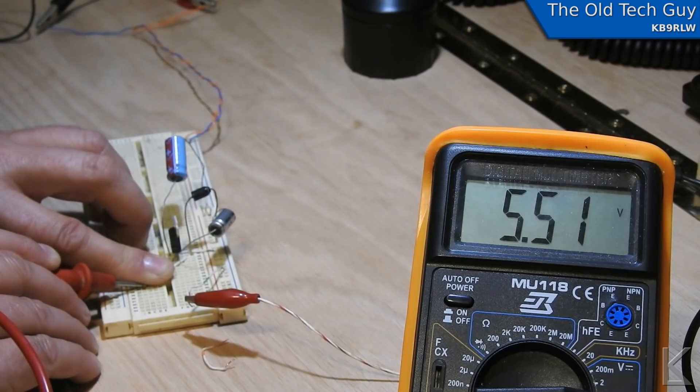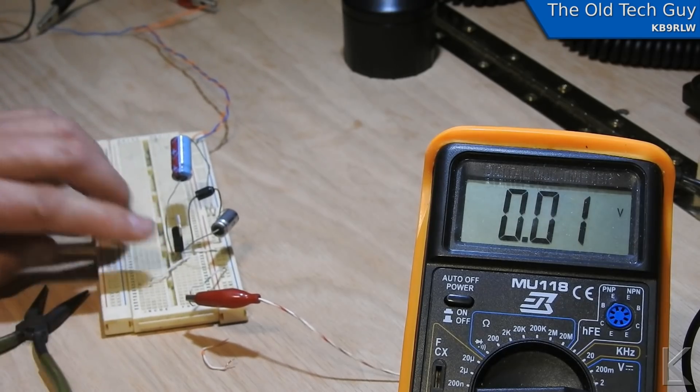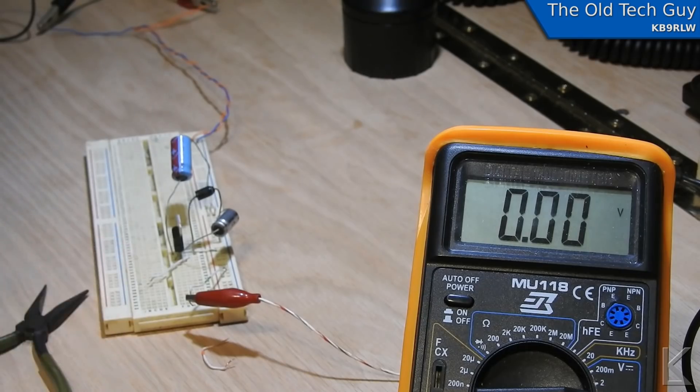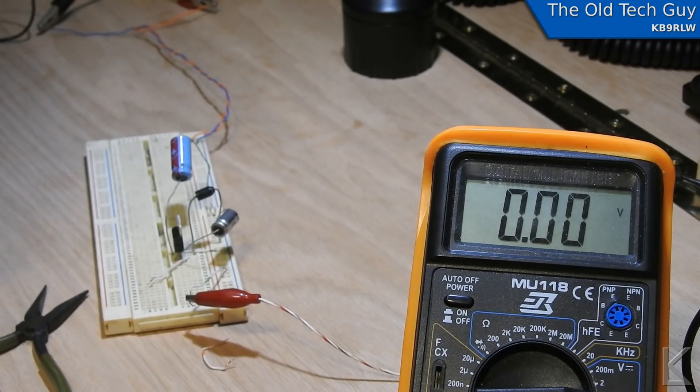And hopefully that will be enough to allow it to charge the cell phone more reliably. So that shows you that it does indeed work. A neat little trick you can do to raise the output a little bit on the 7800 series regulators.